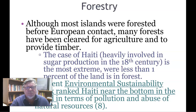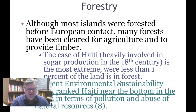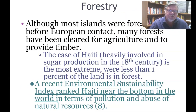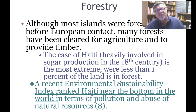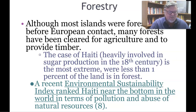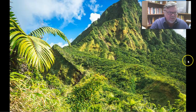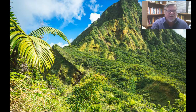Although most islands were forested before European contact, many forests have been cleared for agriculture and timber. Haiti, heavily involved in sugar production, suffered severe deforestation tied to the poverty created by the slave-based sugar production complex. A recent Environmental Sustainability Index ranked Haiti near the bottom of the world in terms of pollution and abuse of natural resources. Montserrat, by contrast, is 60 percent forested.